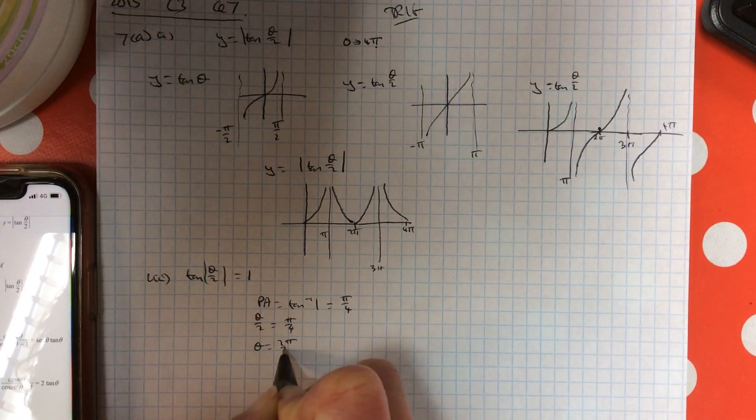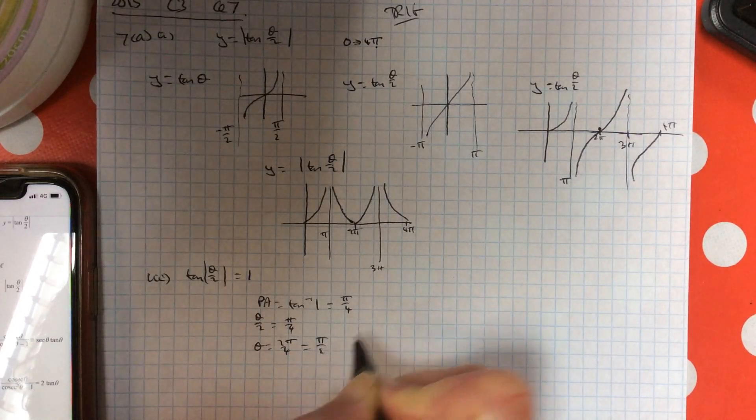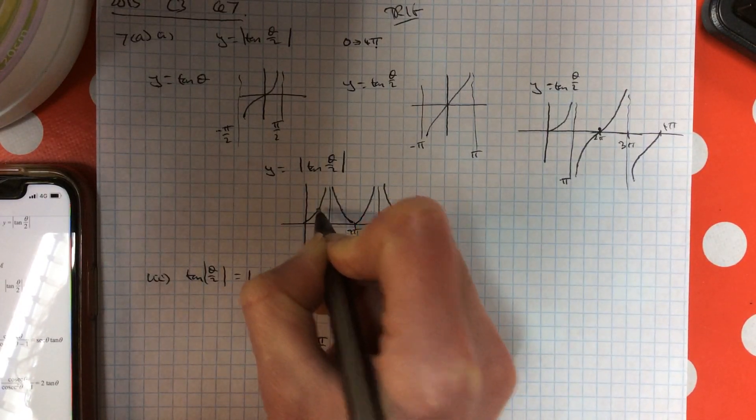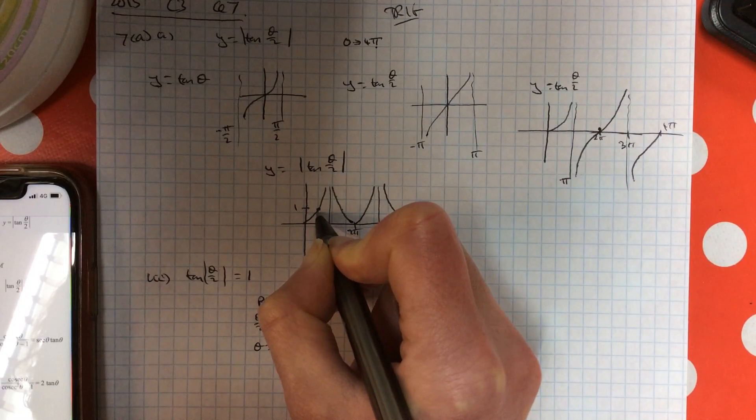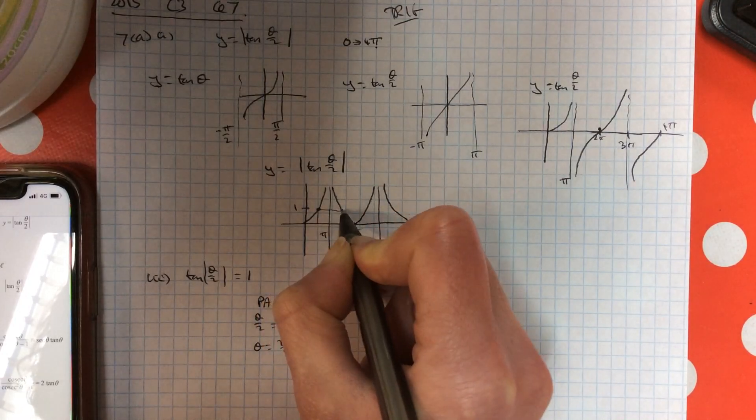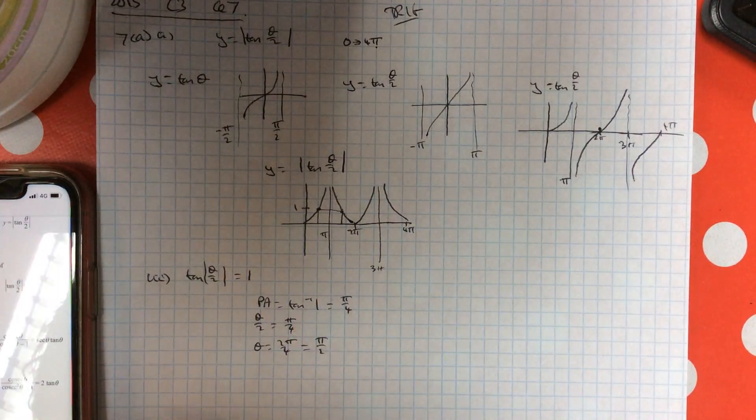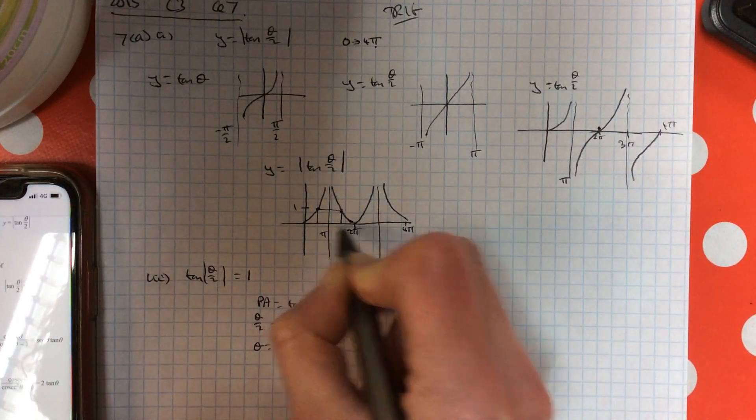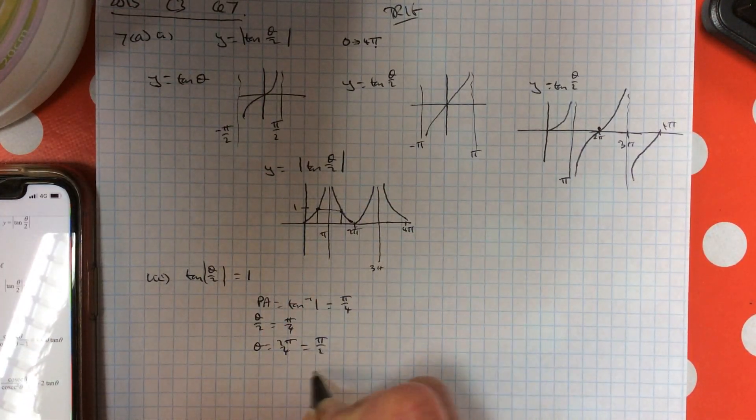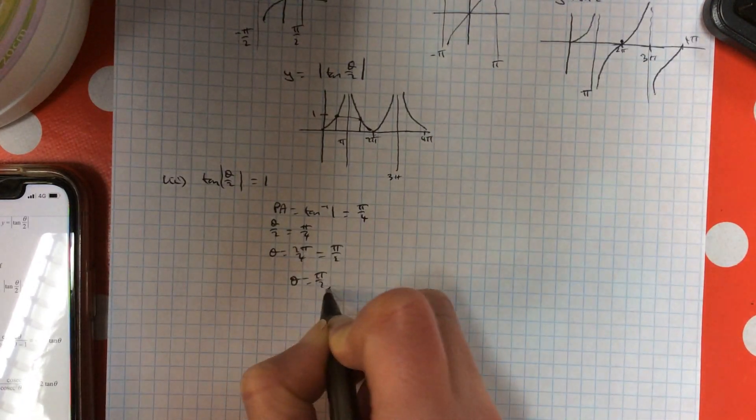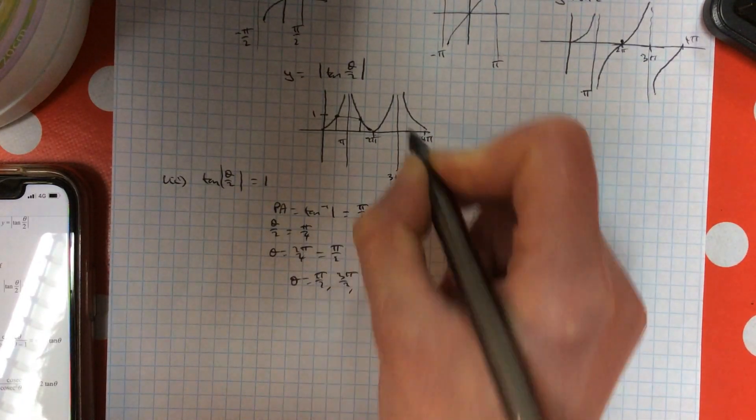So theta is 2 pi over 4, pi over 2. So that gets me started. So this one here is pi over 2. The next one is going to be between pi and 2 pi. So if you list them all, pi over 2, 3 pi over 2.